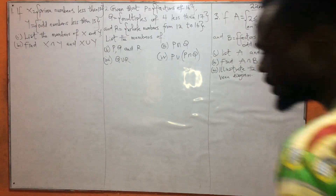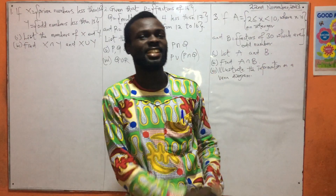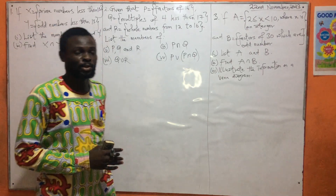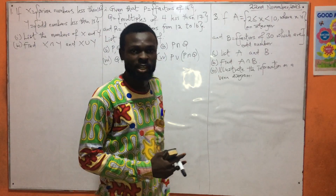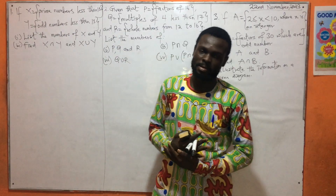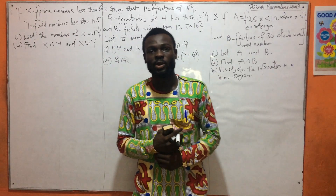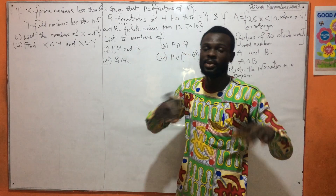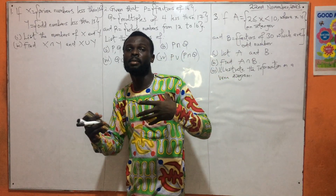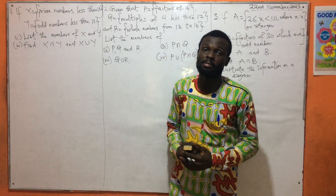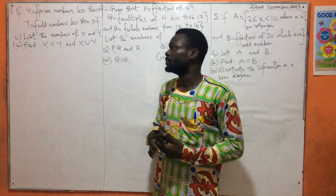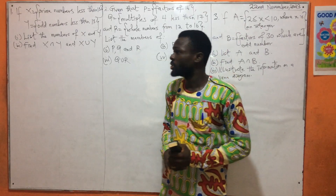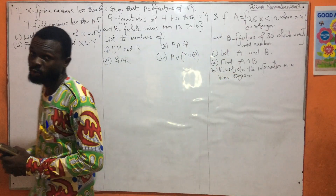Hello viewers, welcome back to Easy Mathematics. We thank God for another wonderful opportunity to bring to you the lesson that we started with in BZ9. Without wasting time, we want to continue on with the relationship that is existing among rational numbers in terms of intersection and union. So let's look at the first example for today.